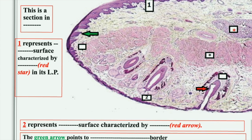In slide five: number one represents the inner surface of the lip, or mucous membrane side, characterized by the labial glands. Number two represents the outer surface or skin surface, characterized by the hair follicle. The green arrow points to the vermilion border, and the black star denotes the skeletal muscle orbicularis oris.